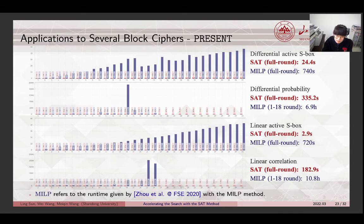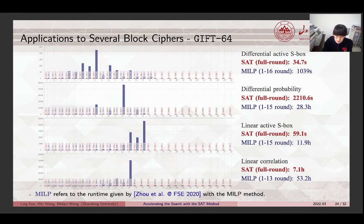Now, we look at the application of the new method to several block ciphers. For PRESENT, we obtain full information about differential active S-box, differential probability, linear active S-box and linear correlation from 1 round to 31 rounds. As far as we know, we are the first one to provide all these results. Compared to the runtime with the MILP, the new method achieves significant improvements. This is the test result for GIFT64.